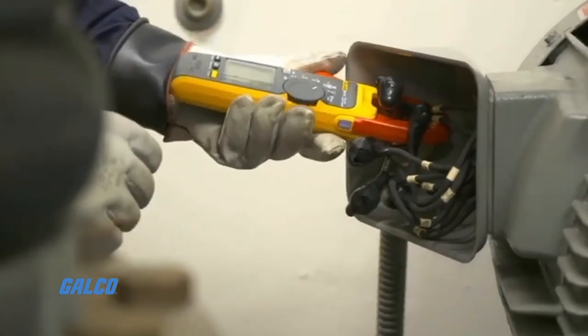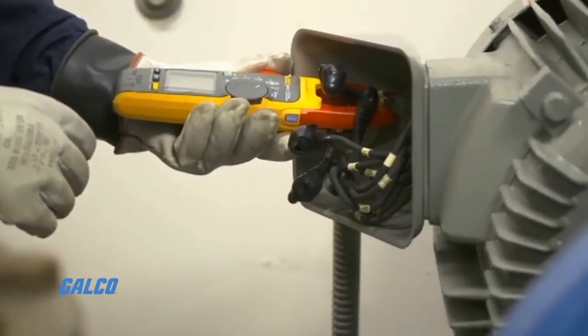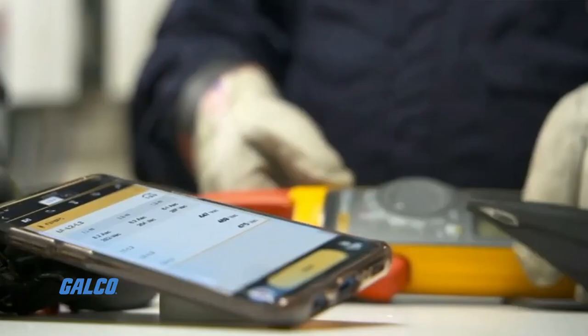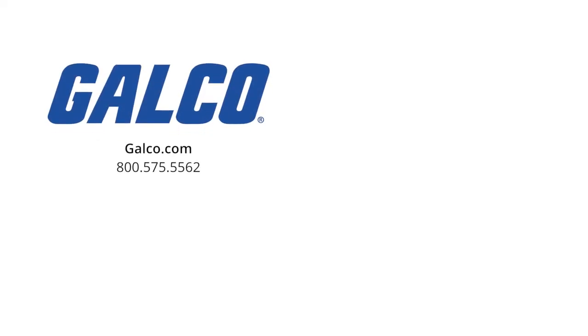And that is how you can measure current flow in a wire without having to break the circuit. For more information on the Fluke 323 meter used in this video, visit us at galco.com. And don't forget to like and subscribe to Galco TV so you can be notified when new videos are posted every week.